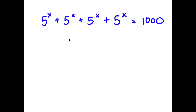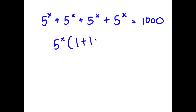So in this problem, I have 5 to the power of x plus 5 to the power of x plus 5 to the power of x plus 5 to the power of x is equal to 1,000. I'm going to first start by factoring out 5 to the power of x. So now I have 5 to the power of x times 1 plus 1 plus 1 plus 1 is equal to 1,000.